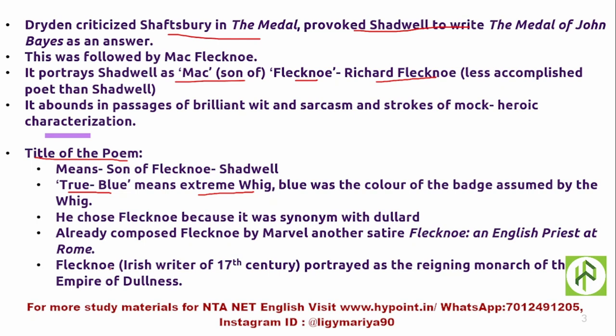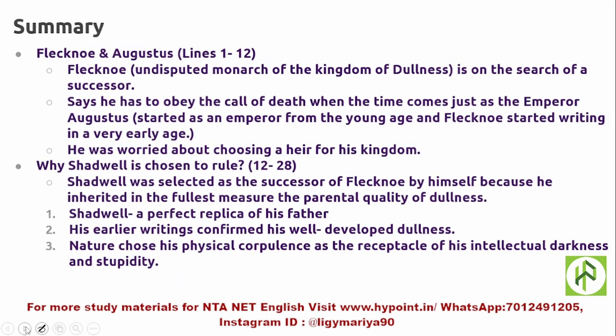Richard Flecknoe was an Irish writer of the 17th century, portrayed in the poem as the reigning monarch of the Empire of Dullness. All the actions in the poem happen in this place known as Dullard — the Empire of Dullness. Flecknoe is considered its reigning monarch, and he is now looking for a suitable heir to his Empire of Dullness.